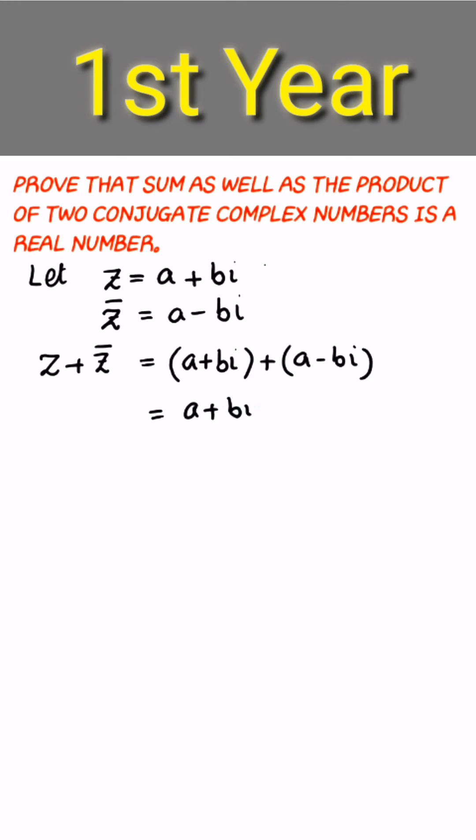a plus b iota plus a minus b iota. After cancellation, a plus a equals 2a, so the sum is real.